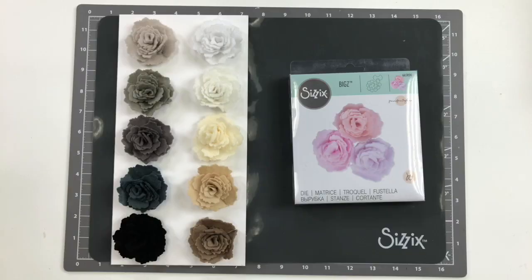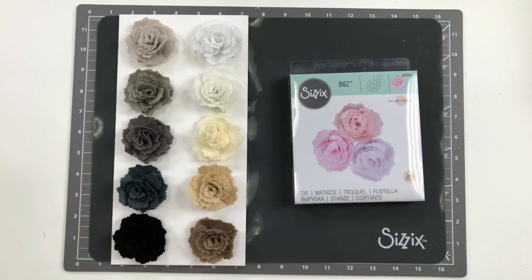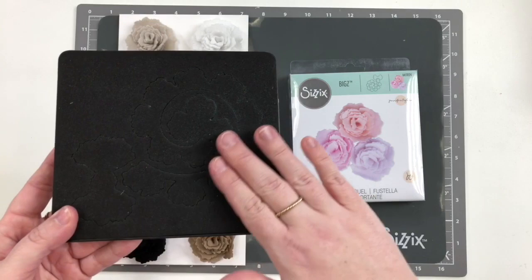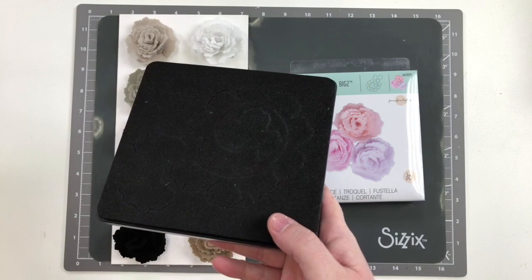So before we get into assembly, I kind of want to talk through the actual flower itself, but also the technology of big dies. So if you aren't familiar with the big die, these are what they look like out of packaging. They have a nice lovely foam here on top, but embedded in the foam is a steel rule blade. And because it's steel, you really can cut through a variety of surfaces.